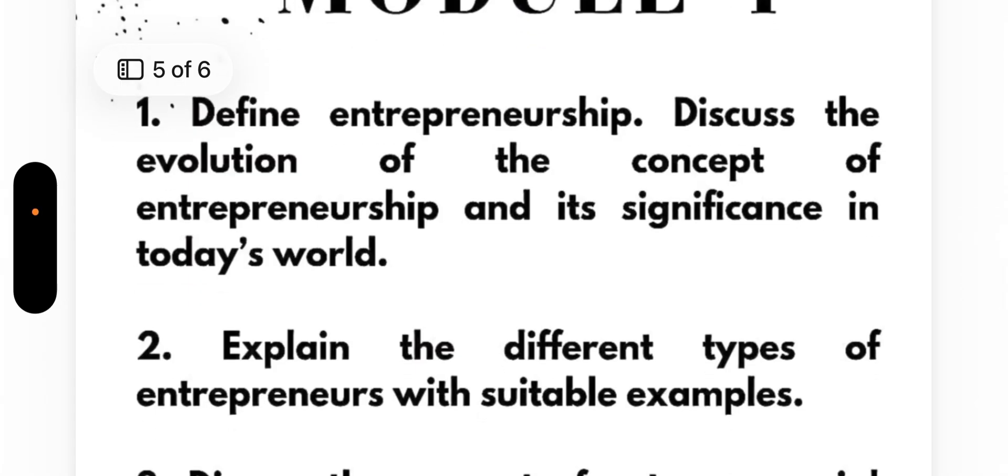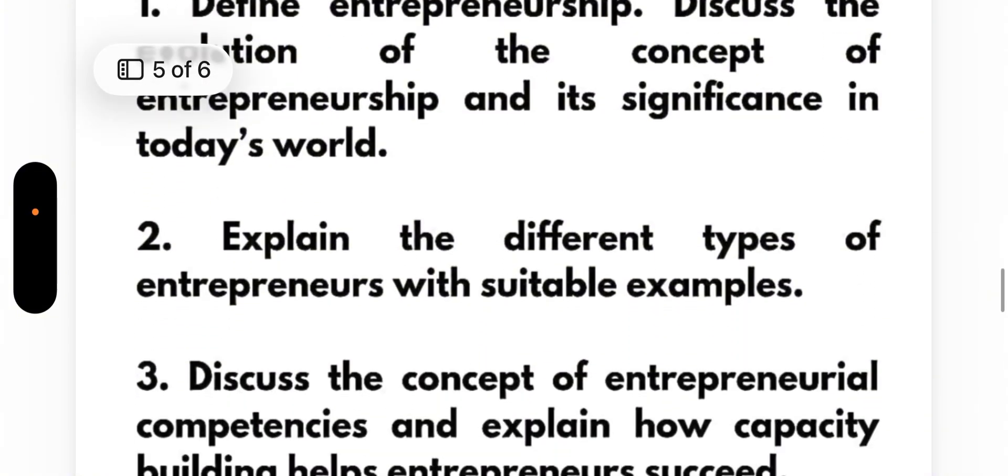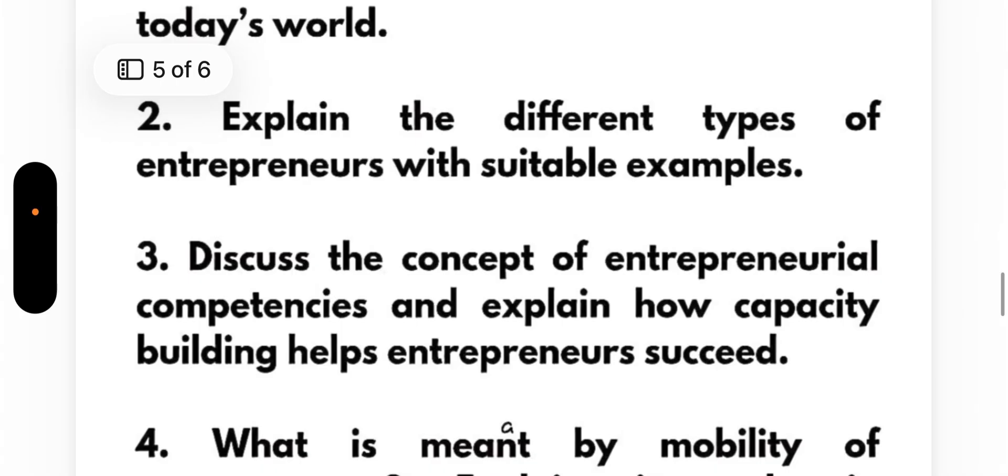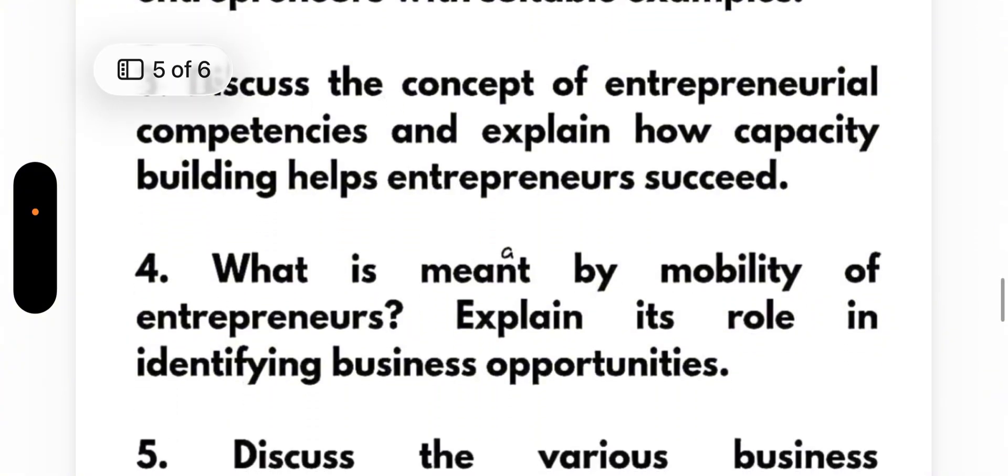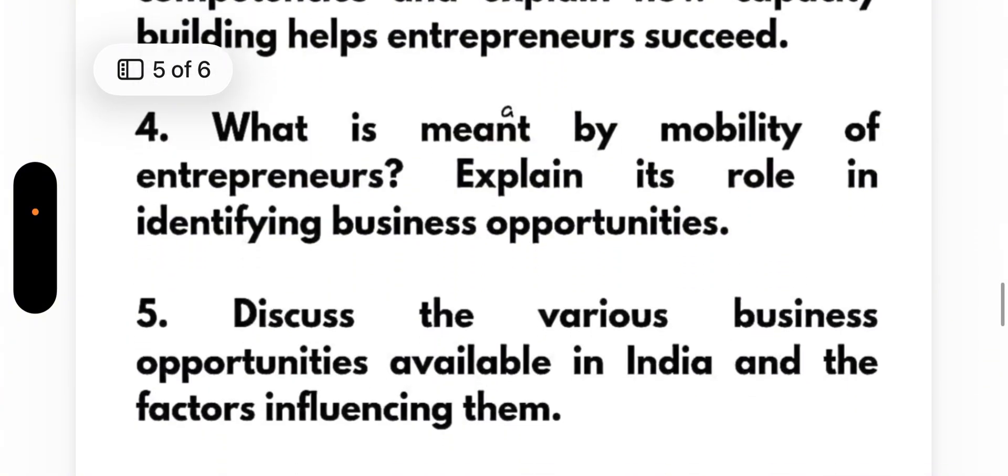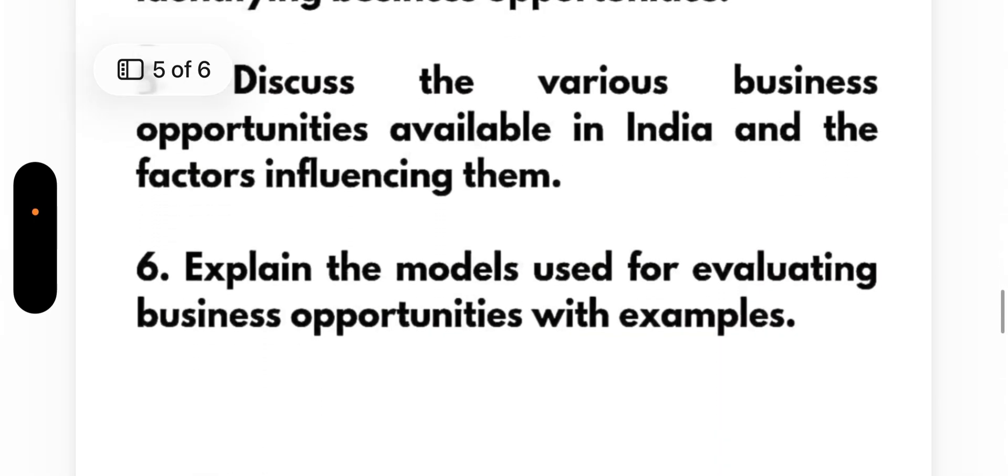Module 4 is here, in which you can also score 20 marks. Define entrepreneurship, discuss the evolution of the concept of entrepreneurship and its significance in today's world. Explain the different types of entrepreneurs with suitable examples. Discuss the concept of entrepreneur competencies and explain how capacity building helps entrepreneurs succeed. What is meant by mobility of entrepreneurs? Explain its role in identifying business opportunities. Discuss the various business opportunities available in India and the factors influencing them. Last one: Explain the models used for evaluating business opportunities with examples.